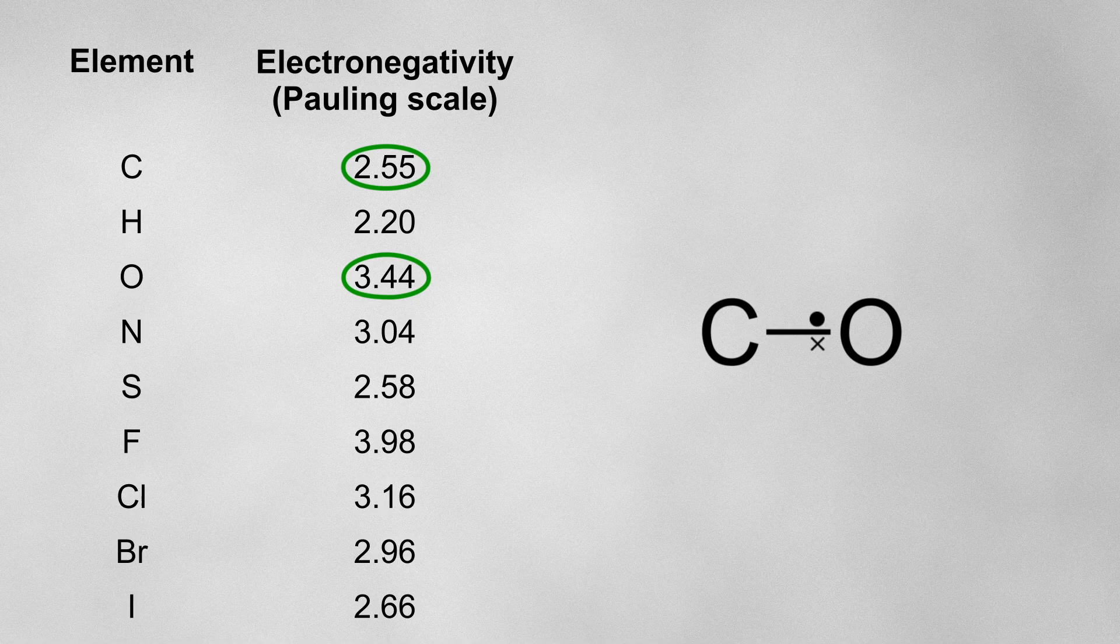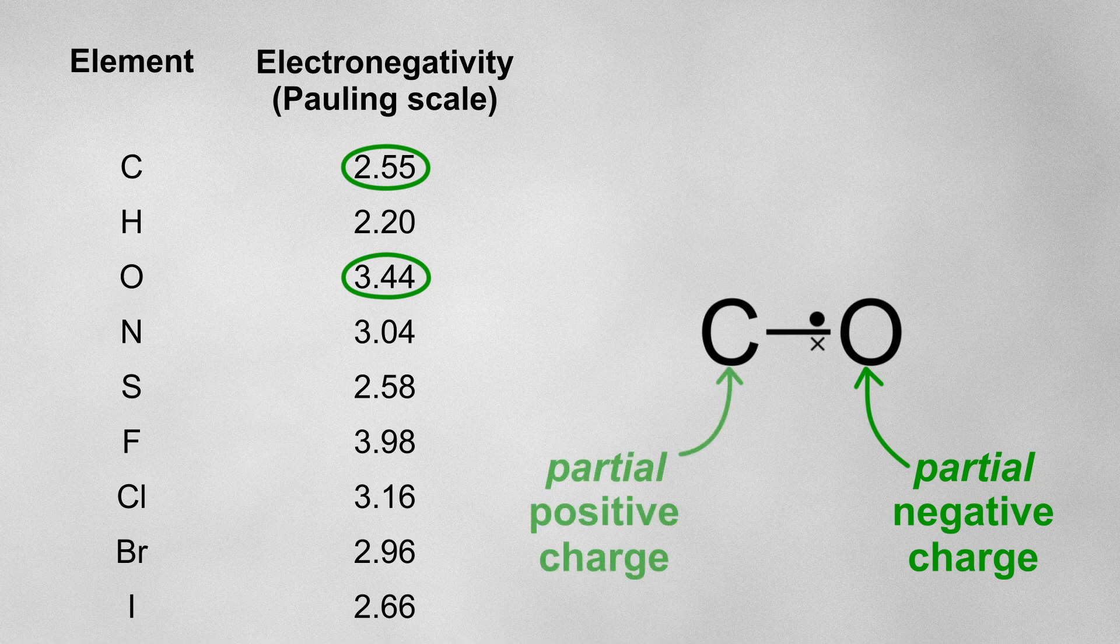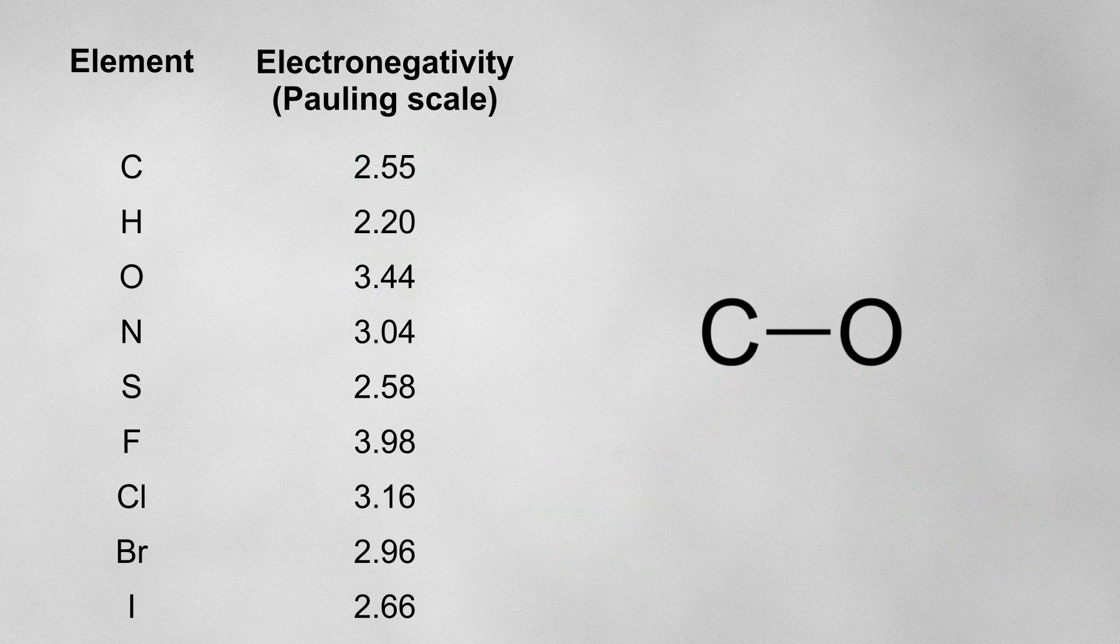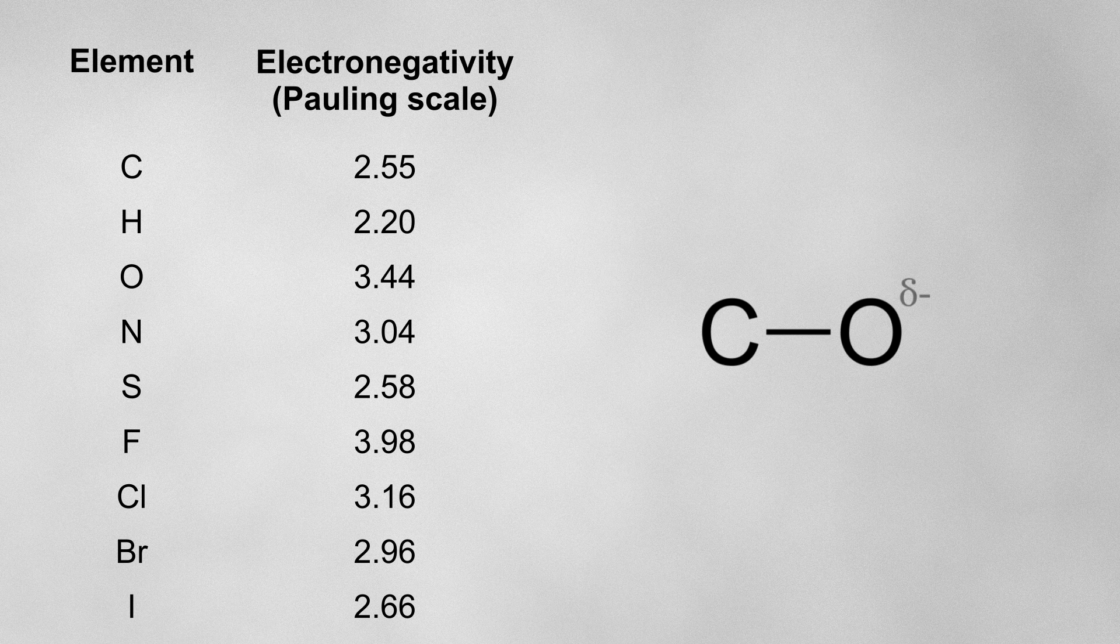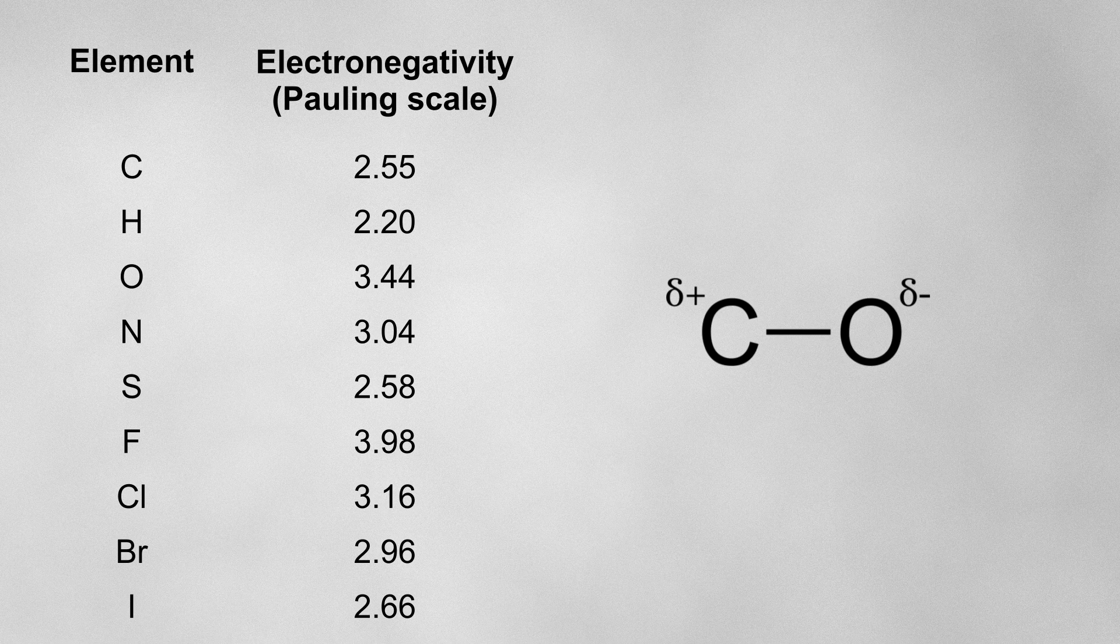This results in the oxygen atom having a partial negative charge, and the carbon atom having a partial positive charge. We represent a partial negative charge with a delta minus symbol, and a partial positive charge with a delta plus symbol. A bond which has this separation of charge is said to have a permanent dipole.